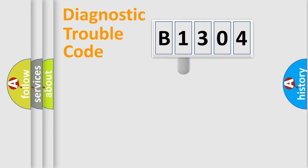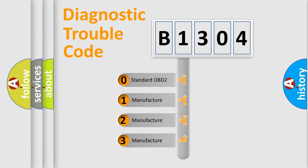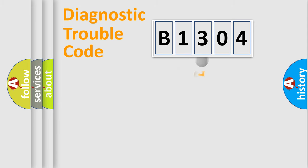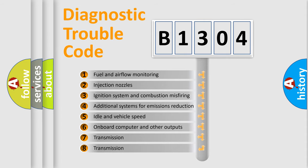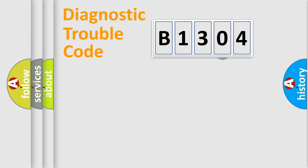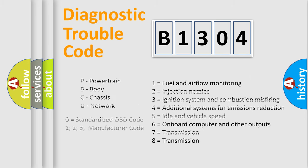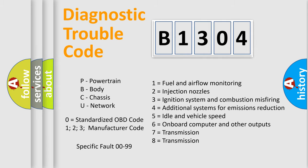This distribution is defined in the first character of the code. If the second character is expressed as zero, it is a standardized error. In the case of numbers 1, 2, or 3, it is a manufacturer-specific error. The third character specifies a subset of errors. This distribution is valid only for the standardized DTC code, and only the last two characters define the specific fault of the group.